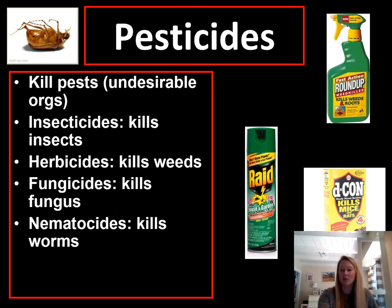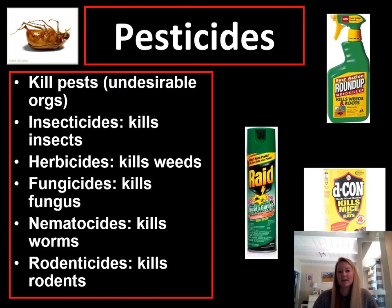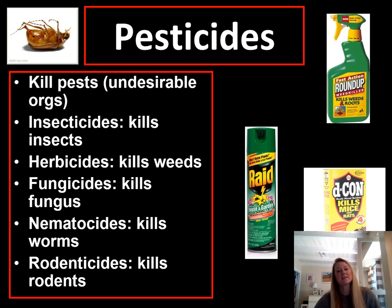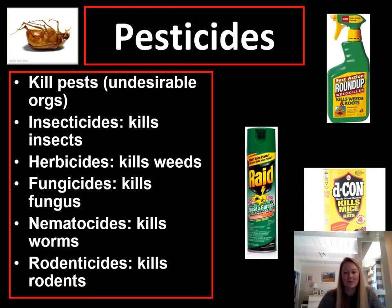There are different categories of pesticides, so let's go through each of these. An insecticide is something that kills insects. Herbicides are the ones that kill weeds. Fungicides usually kill fungus. Nematocides kill worms. And lastly, rodenticides kill rodents. If you go to your local Home Depot, you could probably see all these in one section, one shelf.